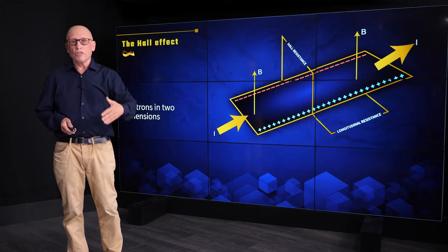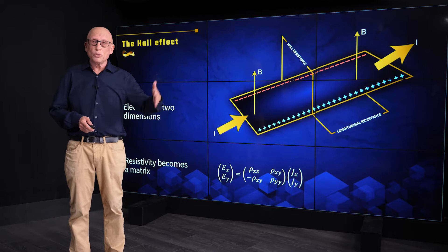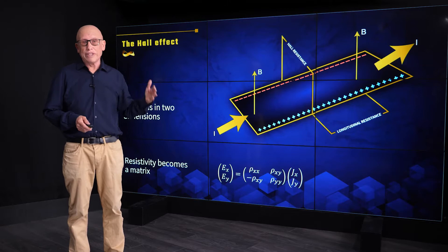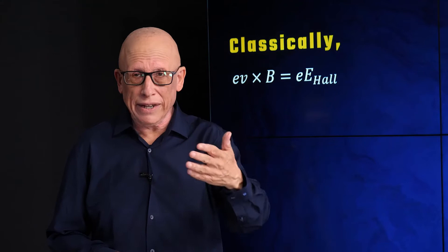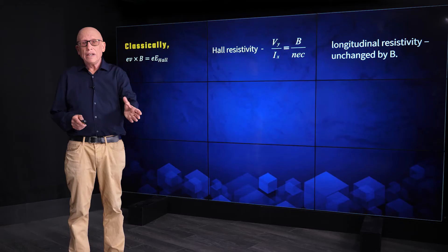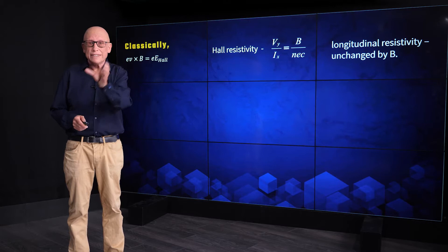So now we have two voltages: a voltage parallel to the current and a voltage perpendicular to the current. And that makes the resistivity into a 2x2 matrix with longitudinal components and Hall off-diagonal components. Classically, the picture is very simple.